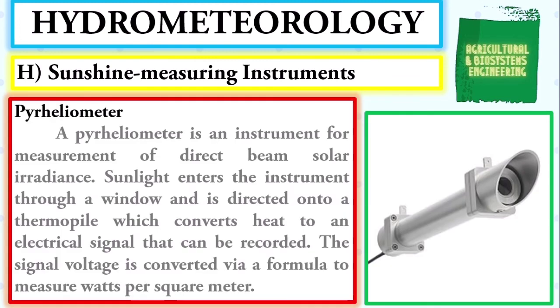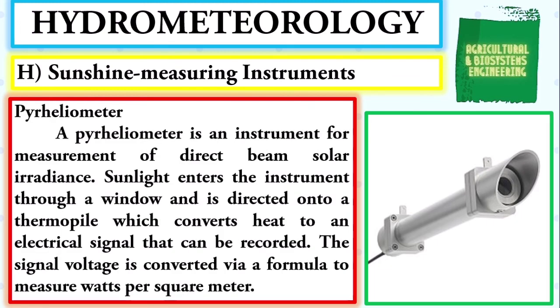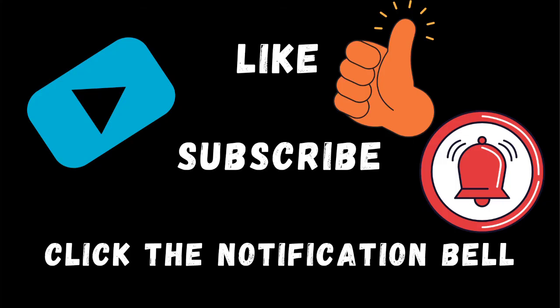Next, the pyrheliometer — an instrument for measurement of direct beam solar irradiance. Sunlight enters through a window and is directed onto a thermopile, which converts heat to an electrical signal that can be recorded. The signal voltage is converted via a formula to measure watts per square meter. That is now the list of some of our weather measuring instruments. Don't forget to like, subscribe, and click the notification bell before you exit.